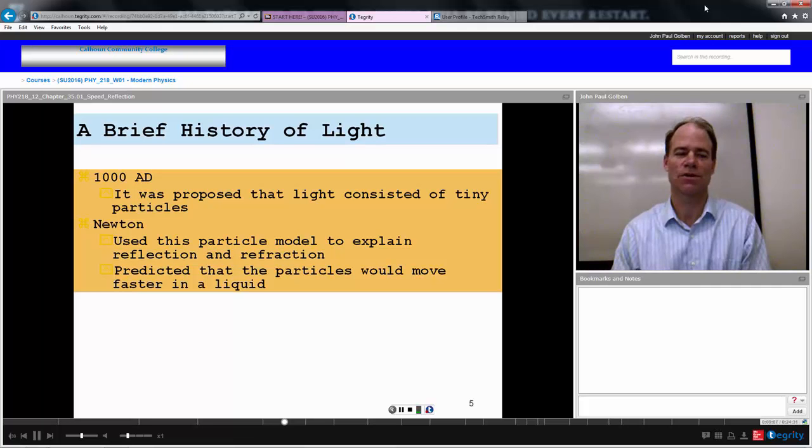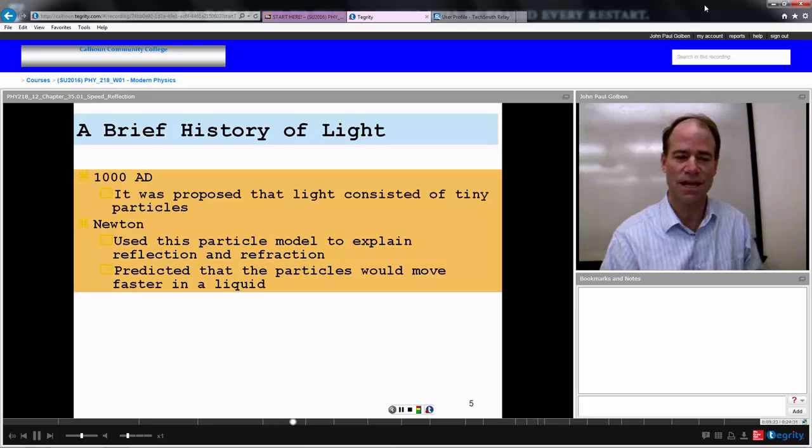This is probably one of the very few places where Newton was actually wrong. I mean, he was right and brilliant about assuming the particle model of light because certainly light can be assumed in that frame of reference as a particle model of light. But he was wrong about the fact that light would move faster in the liquid where it actually moves slower. So one of the very few points where the brilliant Newton was actually wrong.